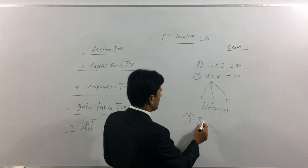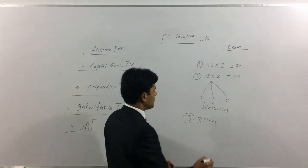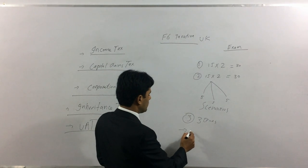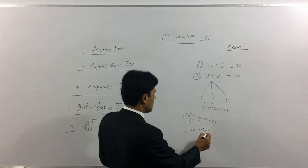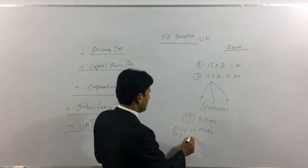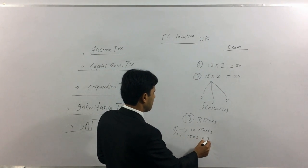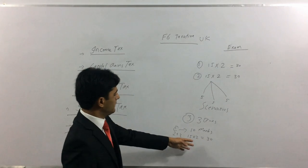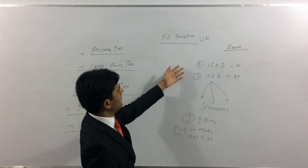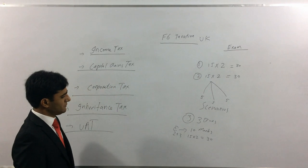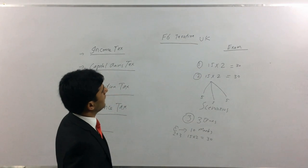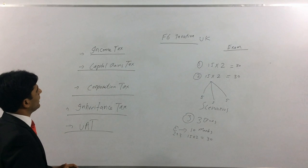Section 3 has three questions which you must all answer. The first question carries 10 marks, and questions 2 and 3 carry 15 marks each, making 40 marks in total for this section. Overall: Section 1 is 30 marks, Section 2 is 30 marks, Section 3 is 40 marks — totalling 100 marks. That is how the F6 exam is structured.